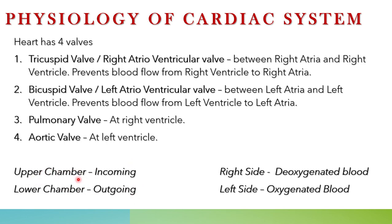The upper chambers — atria — always receive incoming blood, and the lower chambers always pump blood out, either to the lungs or to different parts of the body. Deoxygenated blood from the superior and inferior vena cava comes to the right atrium, which pumps it to the right ventricle. On the left side, oxygenated blood comes through the pulmonary vein to the left atrium, which pumps it through the mitral valve to the left ventricle, and from the left ventricle through the aortic valve to the aorta.